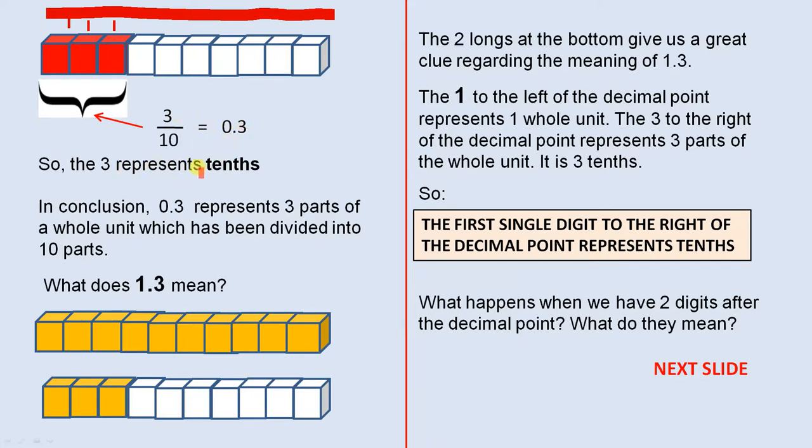So the three represents tenths. When you have a single digit to the right of the decimal point, it represents tenths.